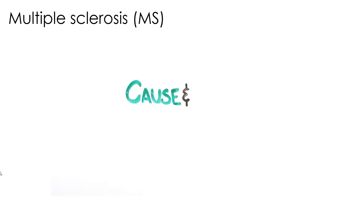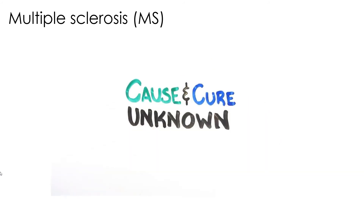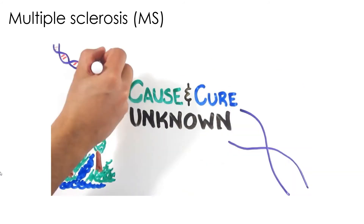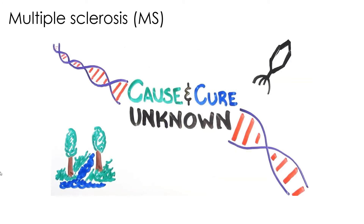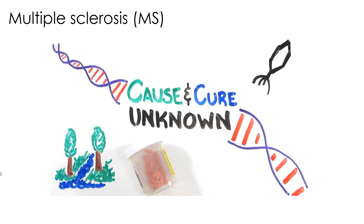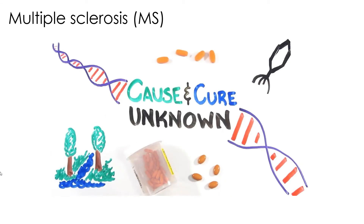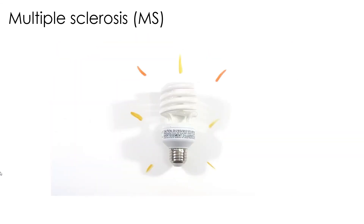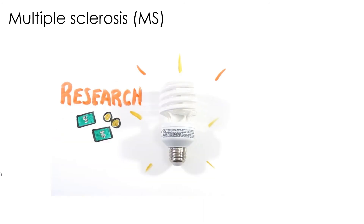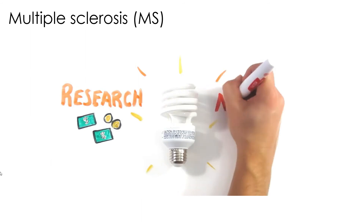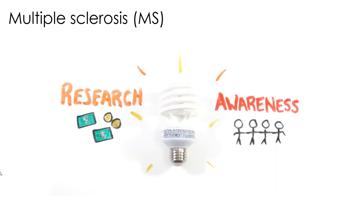At this point, no true cause or cure is known. While potential links to environmental factors, viral infections, and genetics have been found, studies are ongoing and not yet conclusive. And while there has been a lot of work towards alleviating some of the symptoms and slowing their progression, sadly these treatments do not work for all MS sufferers. Ultimately, bringing light to this issue to support and fund research is an incredibly important step, and though many of us will never truly understand the challenges of living with MS, we can work together to raise awareness.